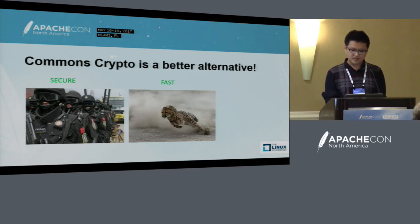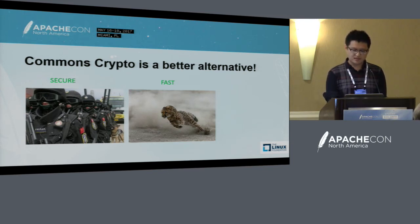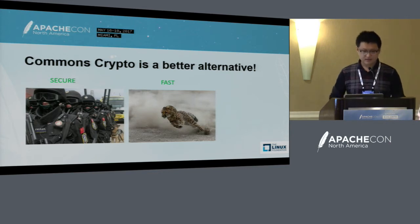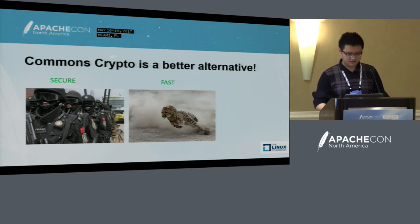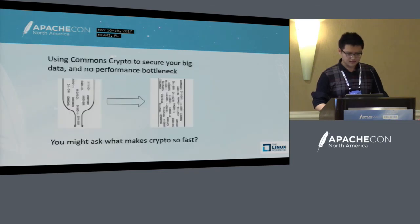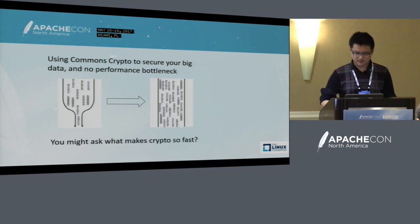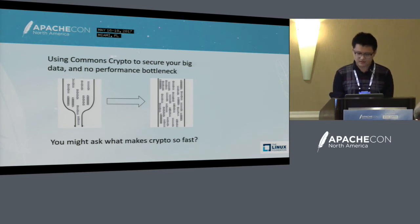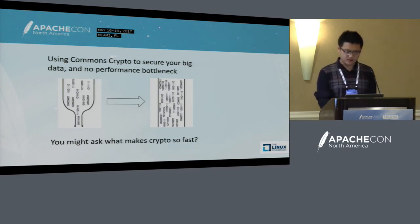Here comes the conclusion. Commons Crypto is secure and faster, and it's a better alternative. Use Commons Crypto to secure your big data — no more performance penalties.